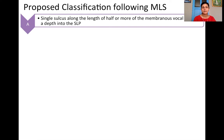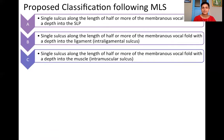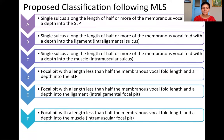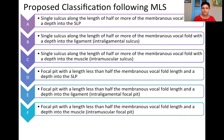Therefore, type A, B, and C sulci are those which are more than 50% of the length of the membranous vocal fold, with depth into the SLP being type A, into the ligament being type B, and into the muscle being type C. Similarly, D, E, and F sulci are similar to a focal pit where the length of the sulcus is less than 50% of the membranous vocal fold.